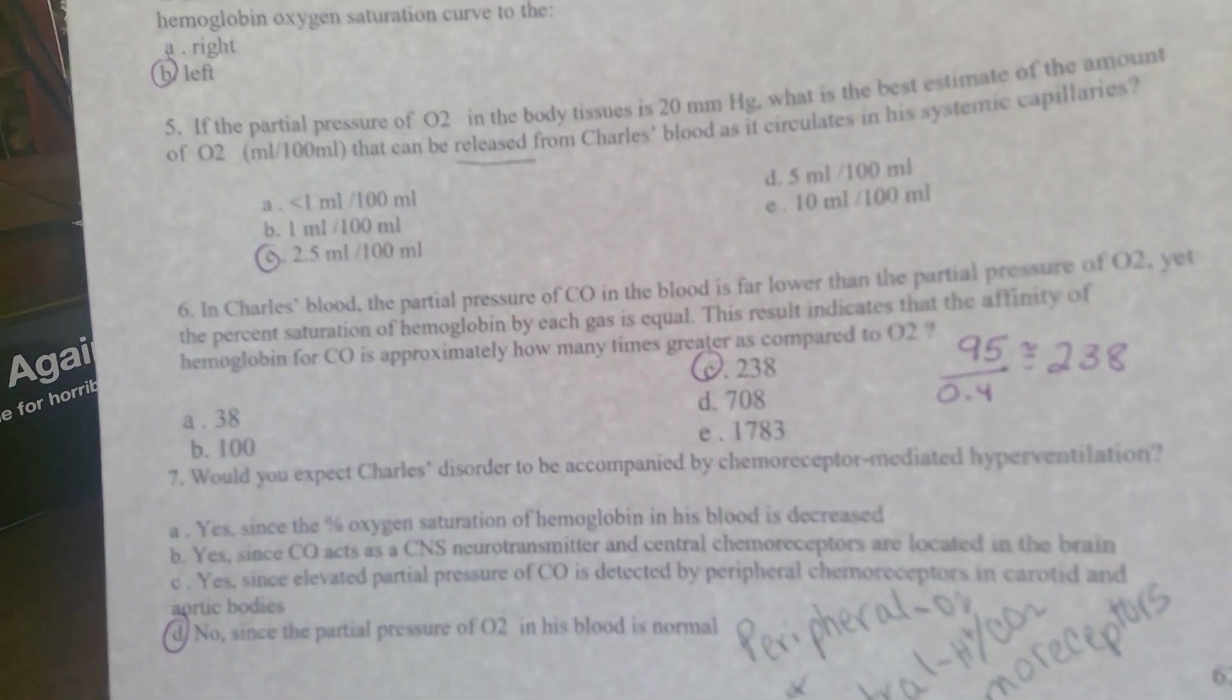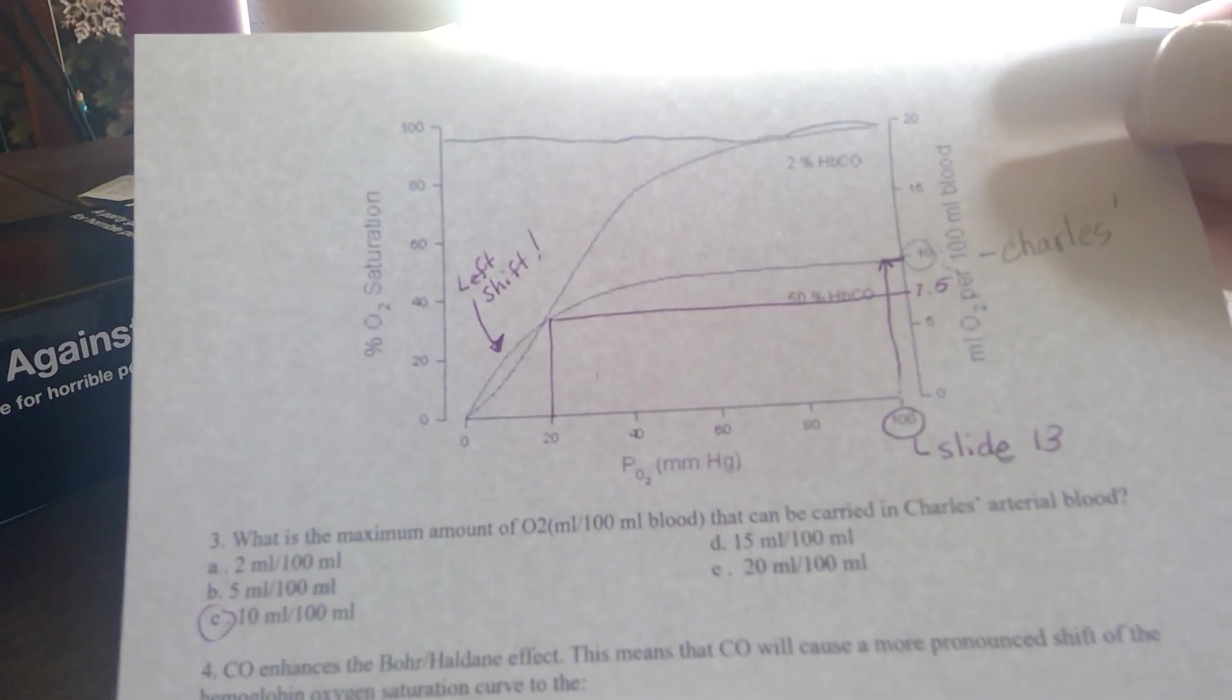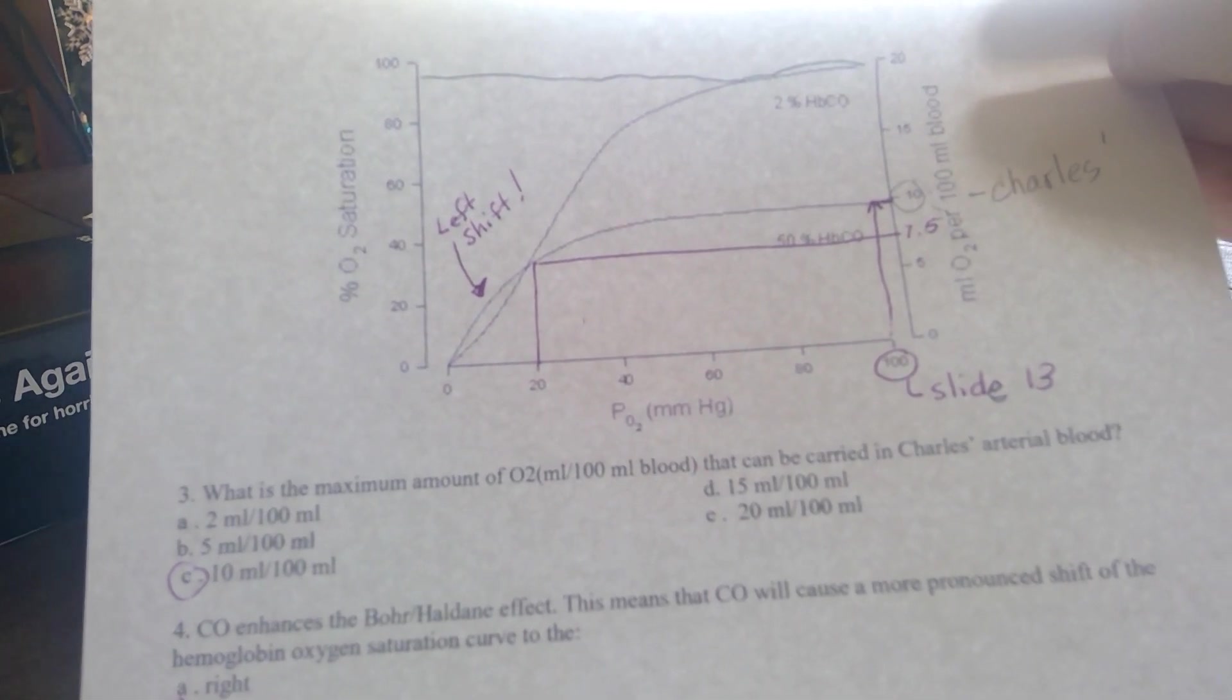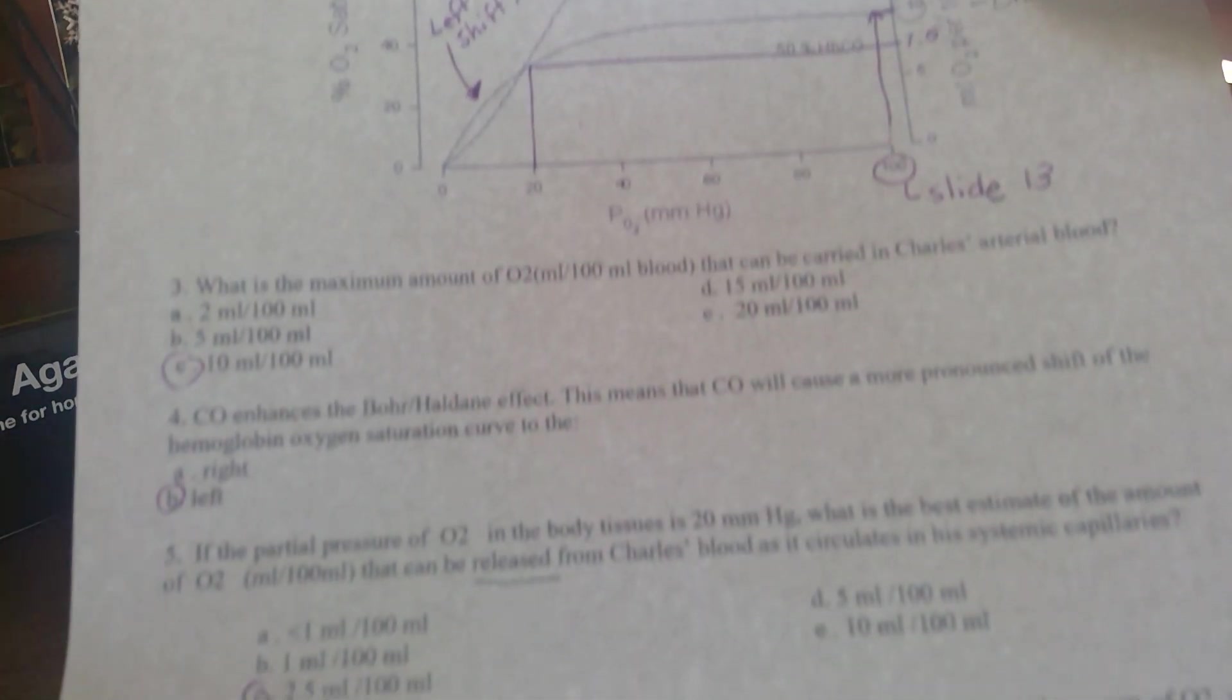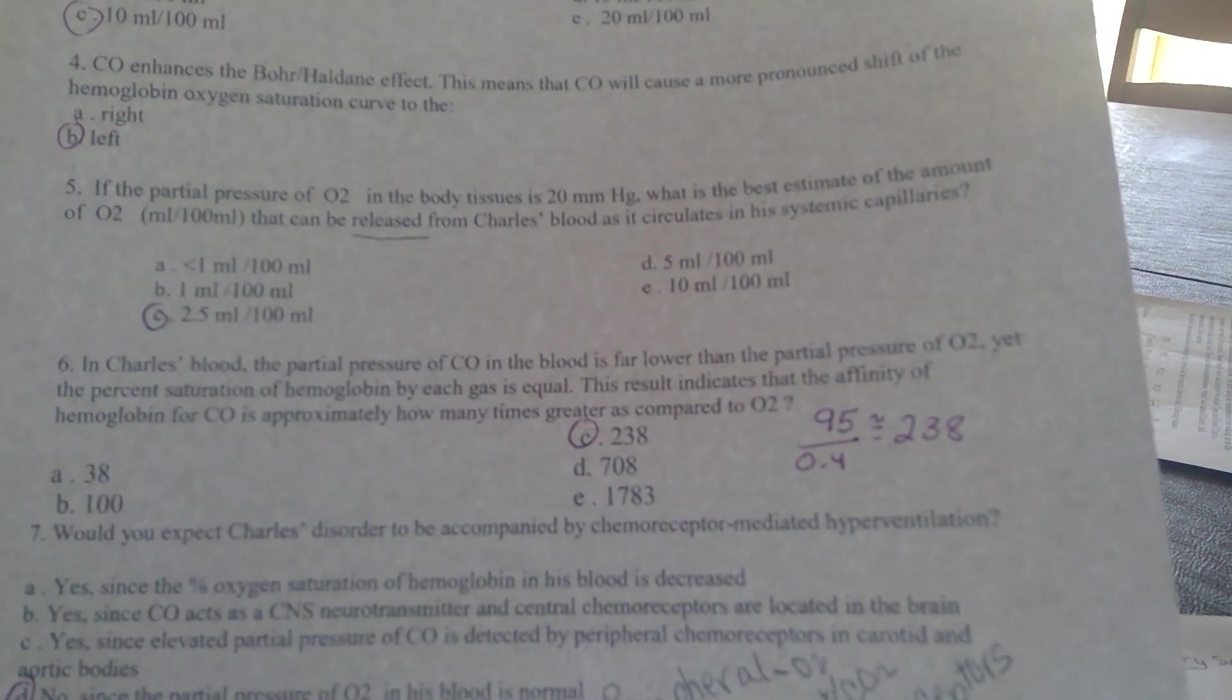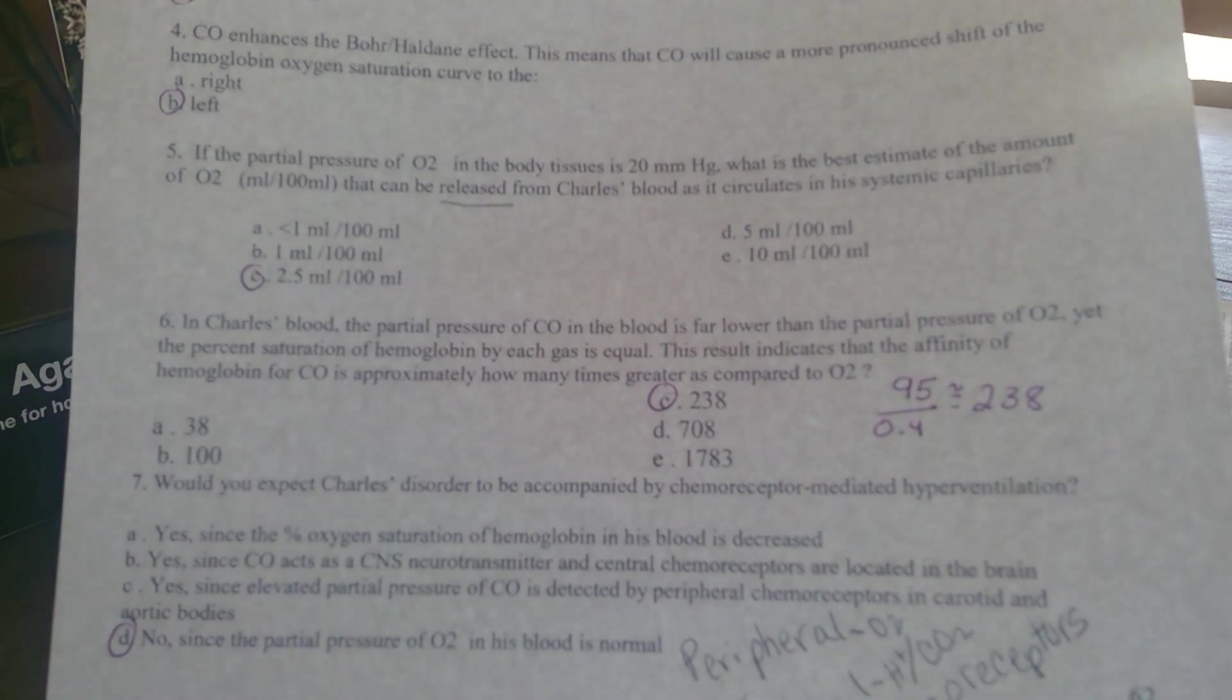If we look at Charles's blood, he has 50% carbon monoxide poisoning. It's a 50-50 draw. And yet the partial pressures were 238 fold different. That's remarkable.